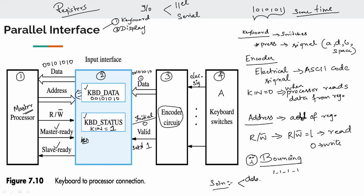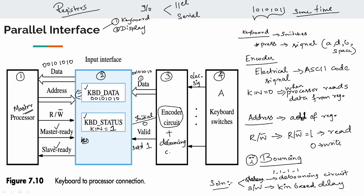There are two solutions to this problem. The first solution is hardware-based: a debouncing circuit is added which introduces a delay. The second solution is software-based: using the key-in flag, a delay is added in software. So in the encoder circuit there is a debouncing circuit, and in software there is a KIN status flag-based delay.